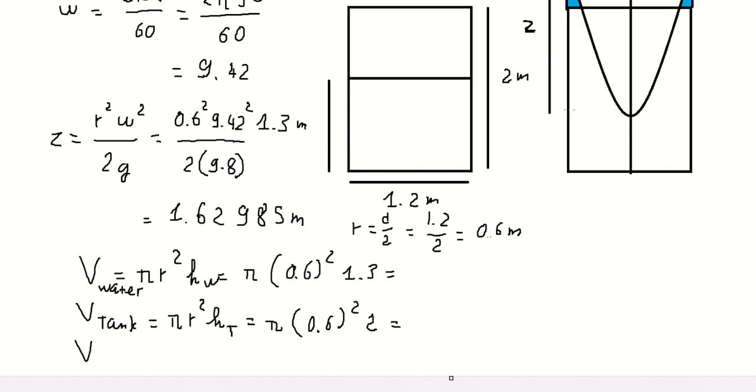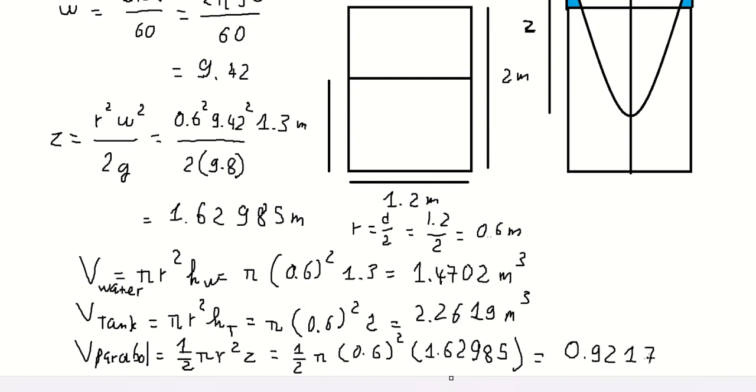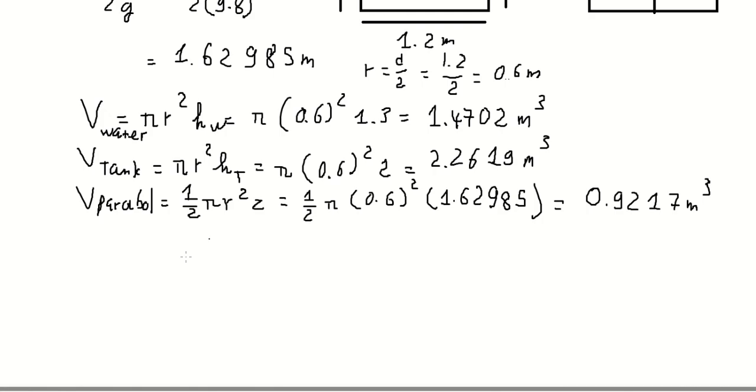And the last one, the volume of the paraboloid in here. The volume of the paraboloid, the volume of the tank, so we can find the volume of the spill water in here.